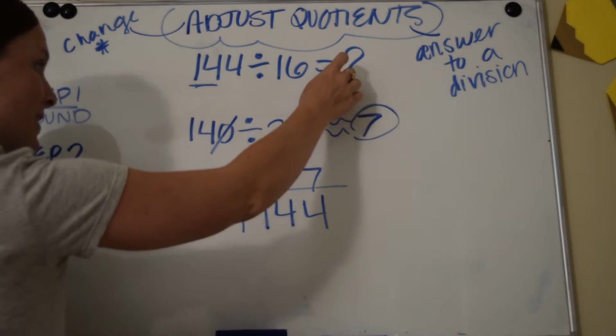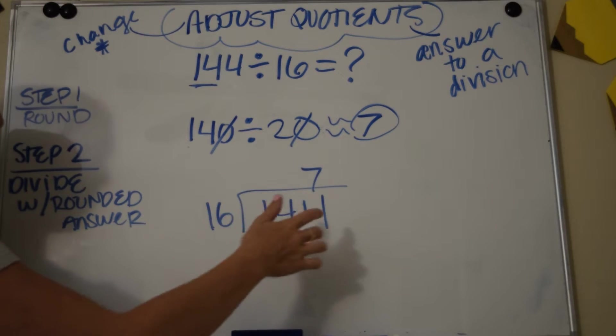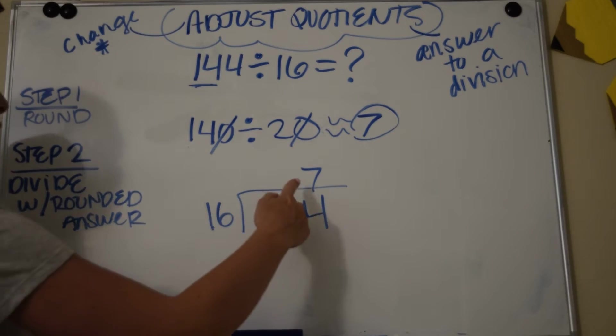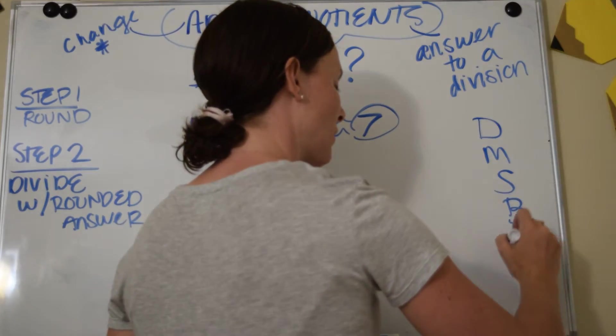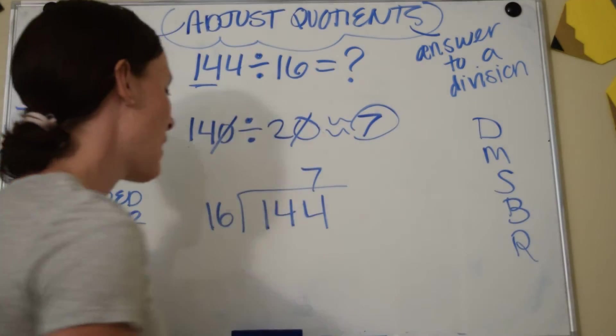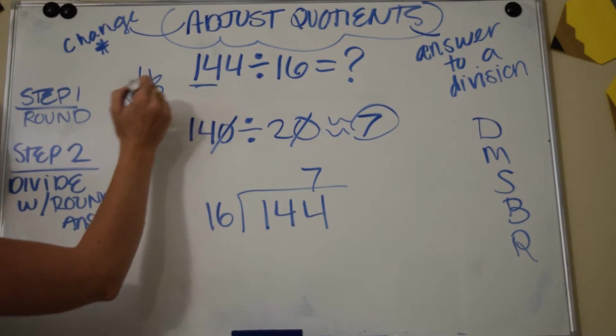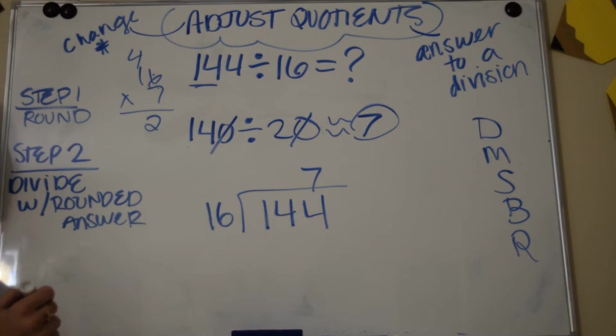So if it's 7, notice I placed it up there as my quotient, as my answer. And now I'm going to solve. So if I'm dividing, remember our steps: does McDonald's sell burgers regularly? I just divided and now I need to multiply, so I need to multiply 16 times 7. 7 times 6 is 42, 7 times 1 is 7, plus 4 is 11.